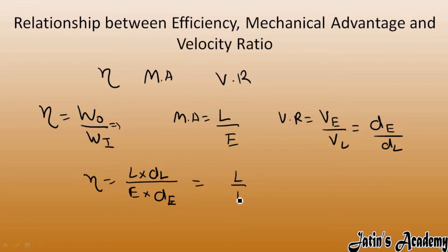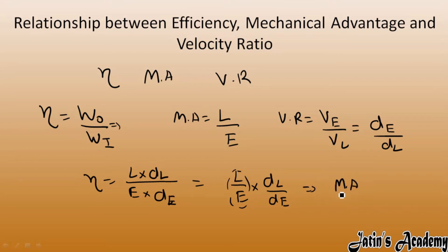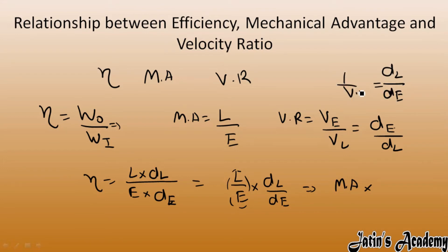Now carefully separate the terms: load over effort gives us mechanical advantage, and displacement of load over displacement of effort is the reciprocal of velocity ratio — that is, one over velocity ratio. So efficiency equals mechanical advantage multiplied by one over velocity ratio, which gives us efficiency equals mechanical advantage over velocity ratio.